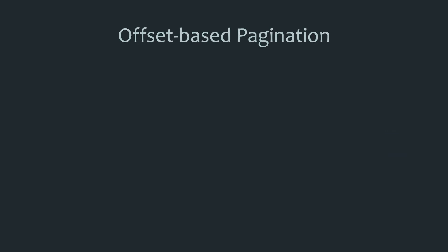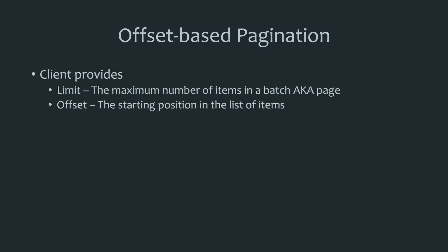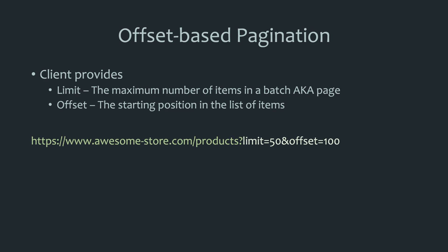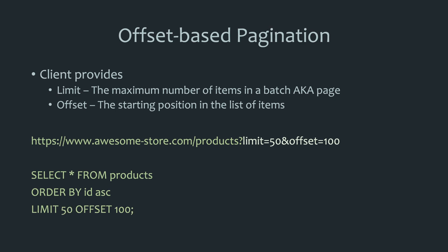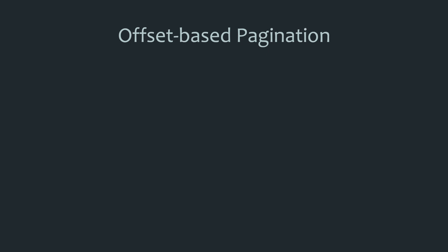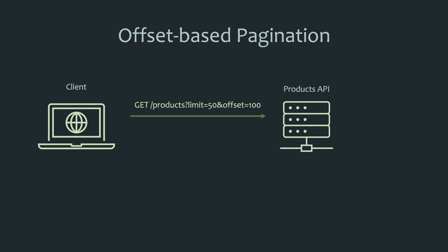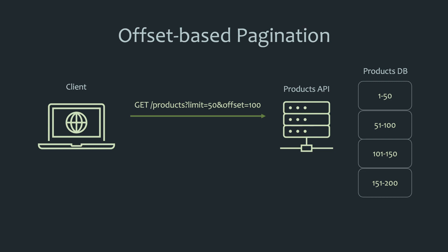What exactly is offset-based pagination? Clients provide a page size that defines the maximum number of items to return and a page number indicating the starting position in the list of items. The terms most commonly used are limit and offset — limit being the maximum number of items, and offset being the starting position. A request with a limit of 50 and an offset of 100 can easily be pulled from a SQL database using a corresponding query. The API server takes these values, skips the first 100 items, and returns the next 50. So if your database had 200 product items, it would return items 101 to 150.